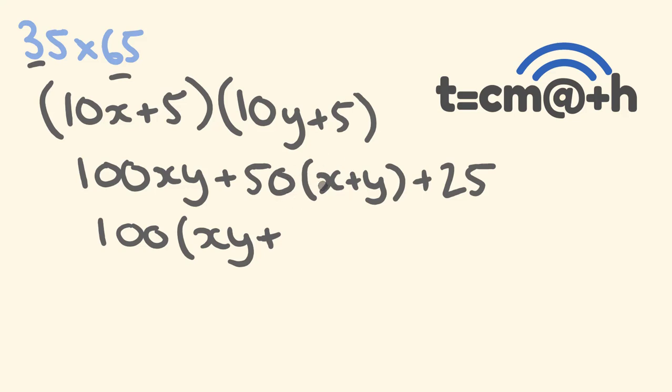We divide this by 100, we're going to get (x plus y), the whole lot, divided by 2, because 50 divided by 100 is a half, yeah? To this, we get 25 on the end, okay? We still have 25 on the end.